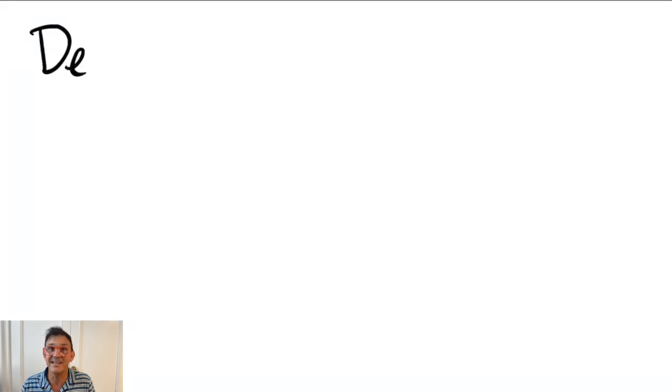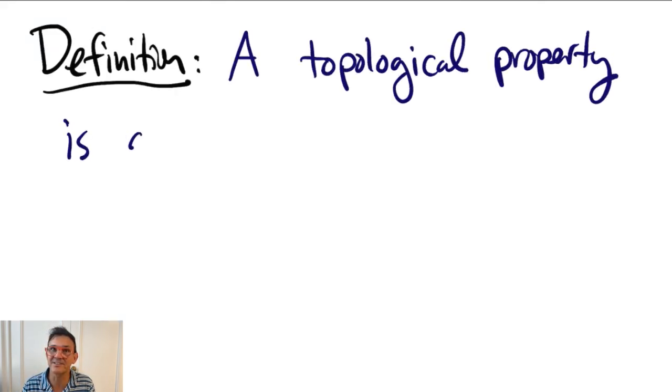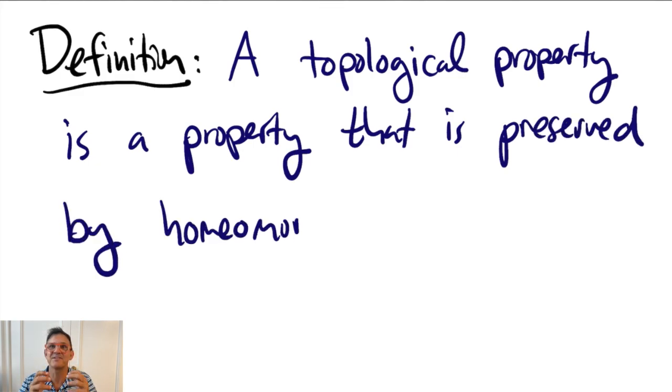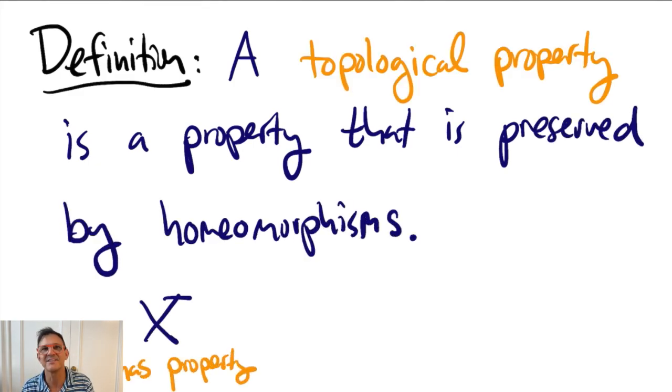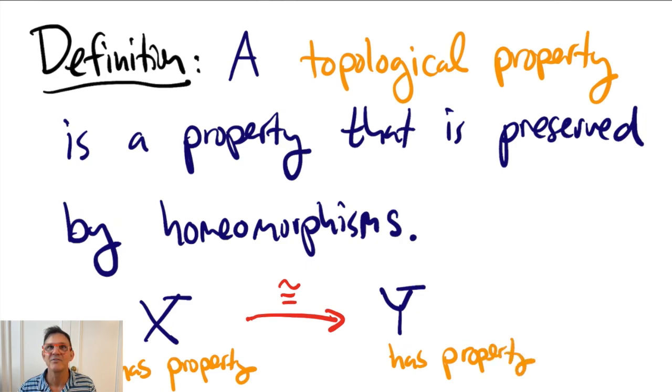And we give them a name. So, a property is called a topological property if it's preserved by homeomorphisms. That is, if a space X has the property and Y is isomorphic to X, then Y has the property.